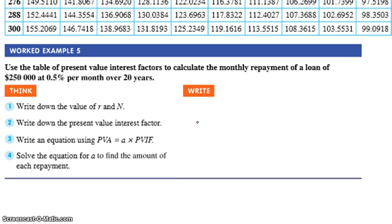Work example five. Use the table of present value interest factors to calculate the monthly repayment on a loan of $250,000 at 0.5% per month over 20 years. I'll let you get that down a little bit. Note to the YouTubers out there, these poor children have to write down their questions. Unlike my class, which are given booklets because I'm a nice guy.